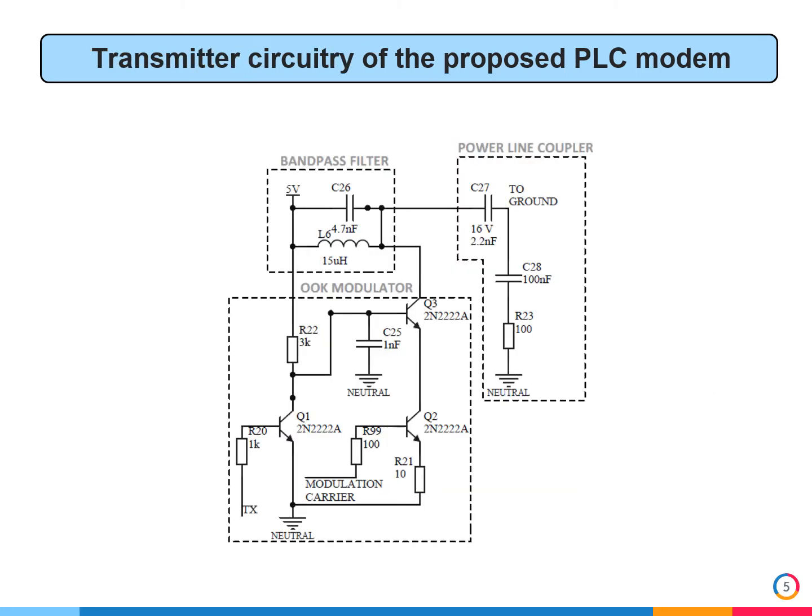This picture shows the circuitry of the transmitter, which is very simple, composed of only discrete components: three transistors, five resistors, four capacitors, and one inductor.